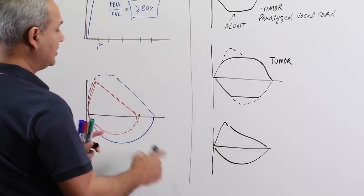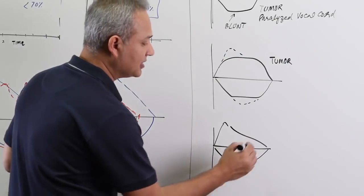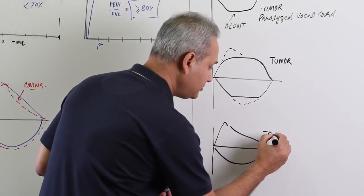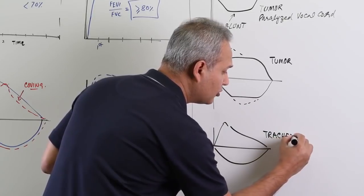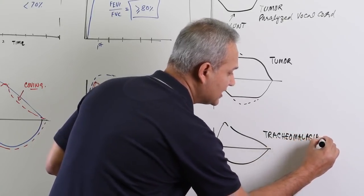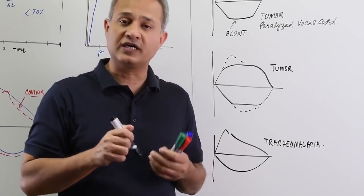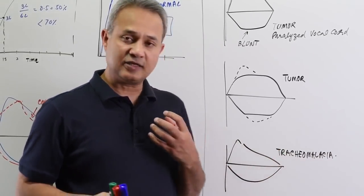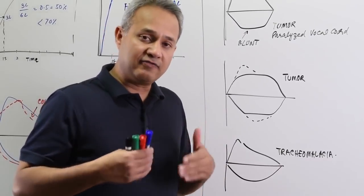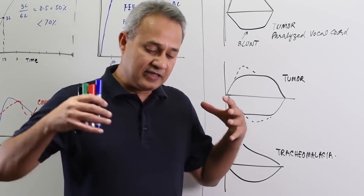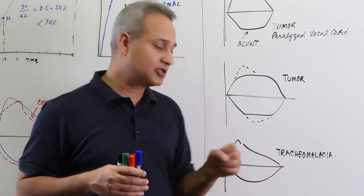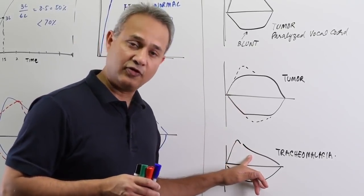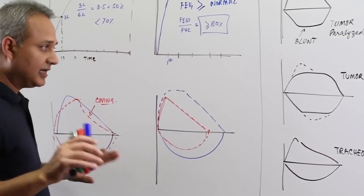One more graph: inspiration is normal, expiration starts normally but then instead of a linear decline it becomes flattened midway — this is called extra-pulmonary variable obstruction, and tracheomalacia is an example. In tracheomalacia, the trachea is floppy — the cartilages are weak due to genetics or inflammation. When the patient starts exhaling, the pressure of the chest causes the trachea to become compressed, so trachea starts okay but then becomes compressed and resistant to flow, and that resistance shows in the graph.